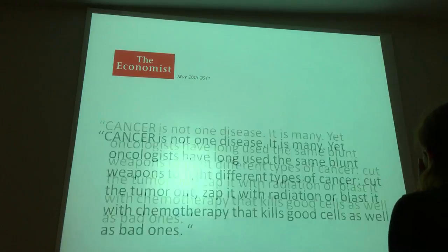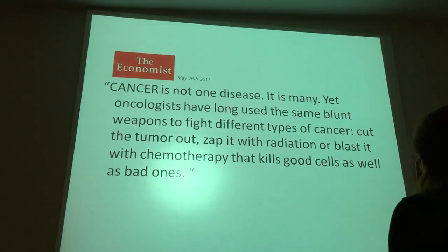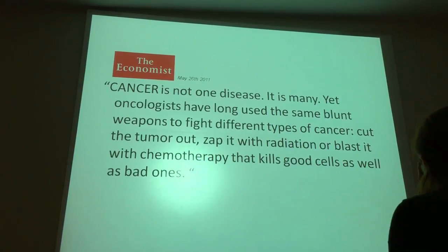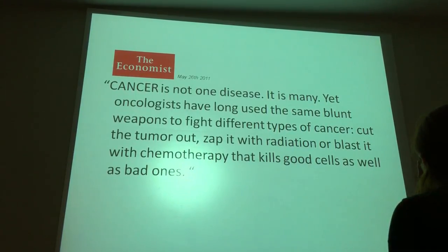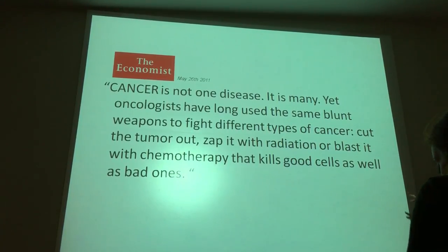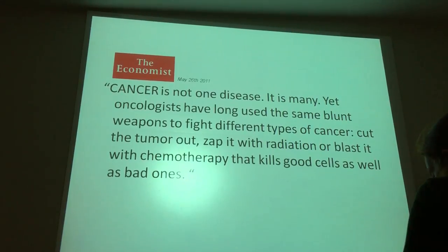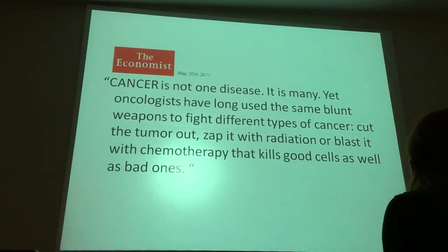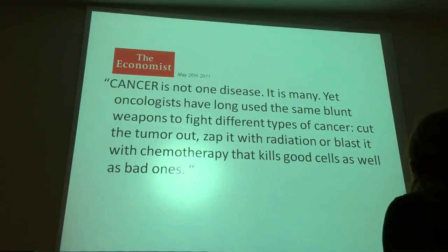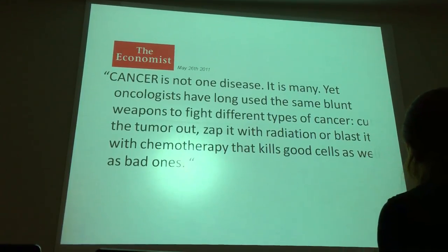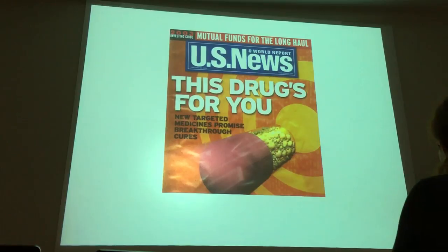In 2011, The Economist wrote that cancer is not one disease but many. It's true — our doctors have long used the same blunt weapons against different types of cancer: cut the tumor out, burn with radiation, or blast with chemotherapy that kills good cells as well as bad ones. We have to learn that cancer is not one disease, and we really need to do our homework first: molecular subtyping, molecular identification of what is the driver mutation of the individual tumor.